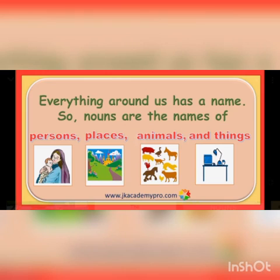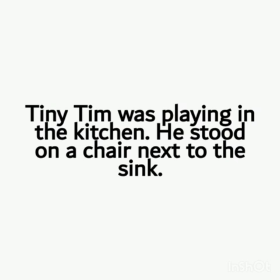And nouns are also the names of things — anything. It could be a chair, it could be a table, it could be a phone, your laptop, anything. So everything around us has a name. Nouns are the names of a person, place, animal, and thing.